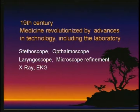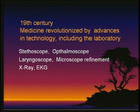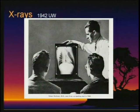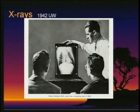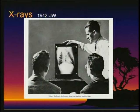In the 19th century, medicine was revolutionized by advances in technology including the laboratory. Stethoscopes were introduced, ophthalmoscopes, laryngoscopes, refinement of the microscope, EKGs, x-rays — all these things added to the clinician's ability to differentiate. This is actually a 1949 picture from the University of Washington, showing physicians examining an x-ray. This is an extension of observation. I include radiologists and our friends the anatomic pathologists in the category of physical exam.